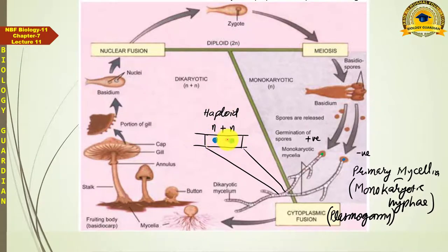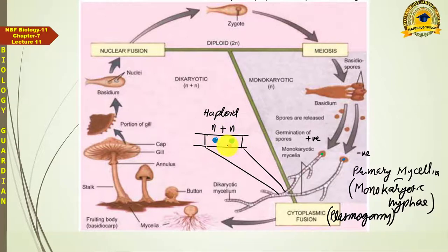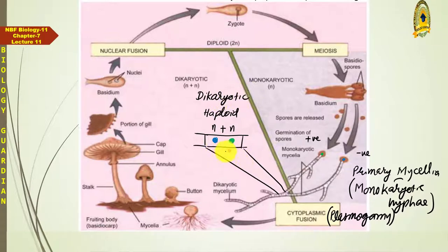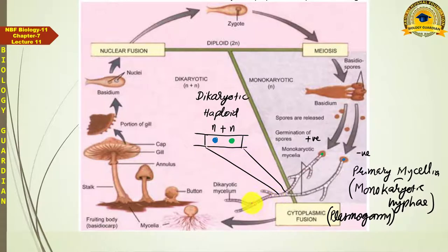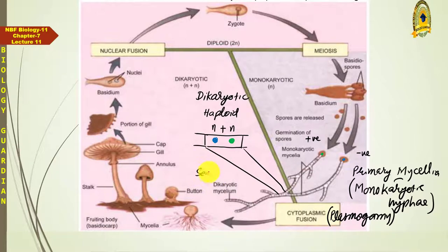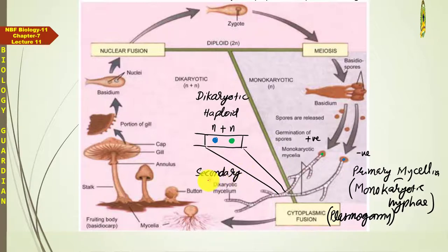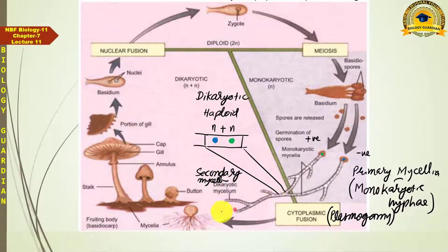This can be called a double haploid cell but not diploid. This n+n diakaryotic haploid cell comes into existence, and further division produces more such cells, forming an entire diakaryotic mycelium. This diakaryotic mycelium is actually the secondary mycelium, which develops after plasmogamy. This secondary mycelium continues to grow until an entire mushroom begins to develop from it.